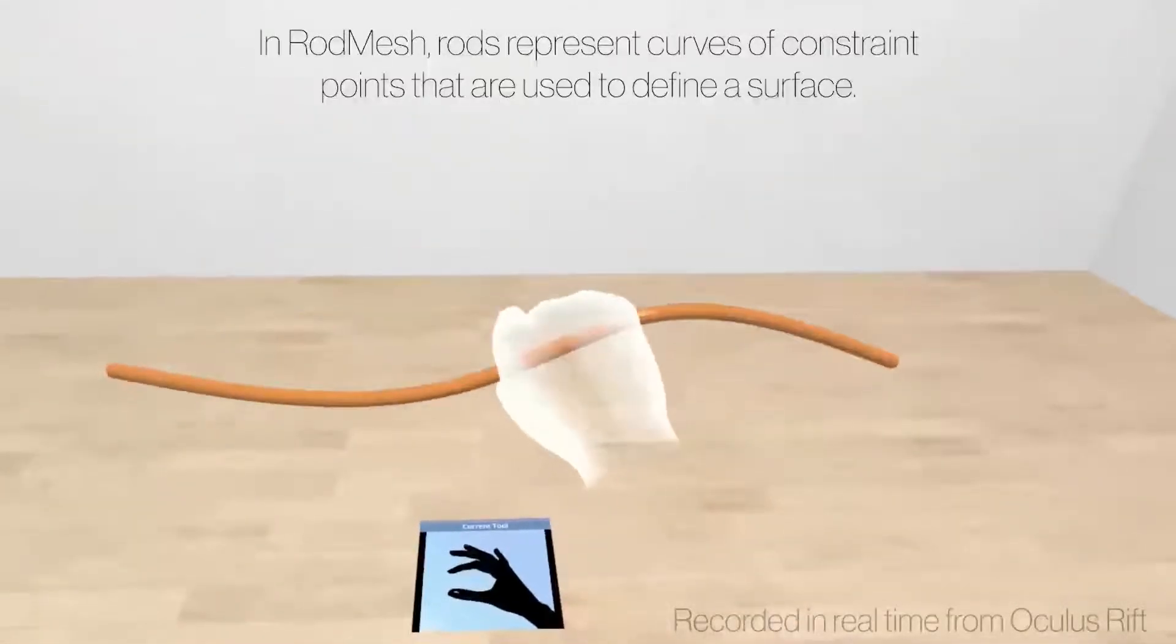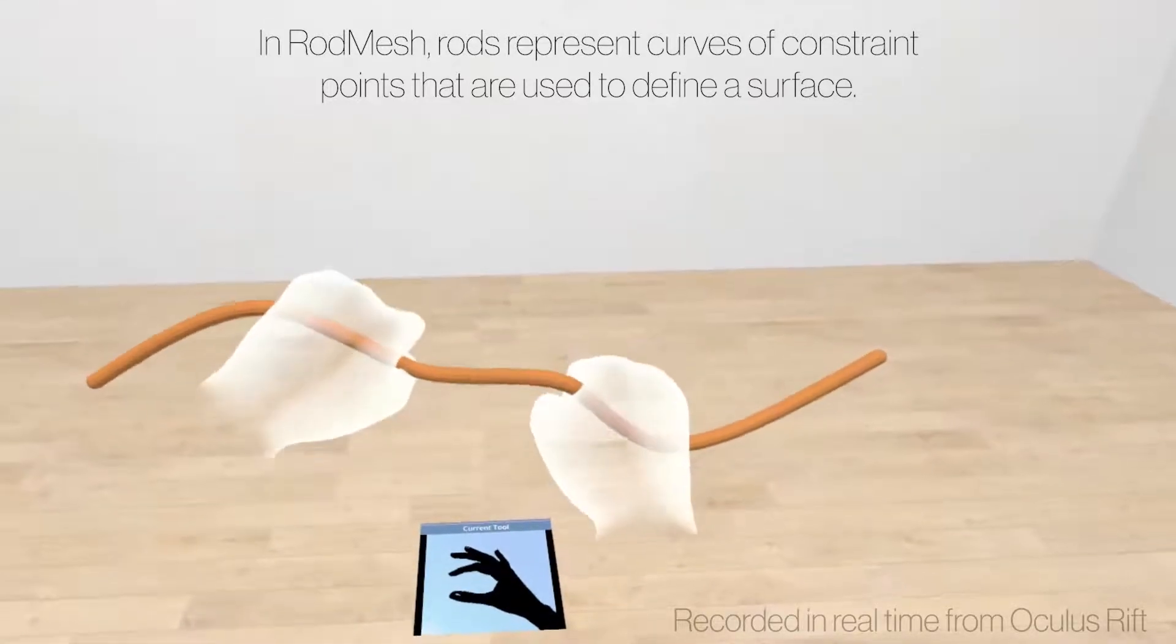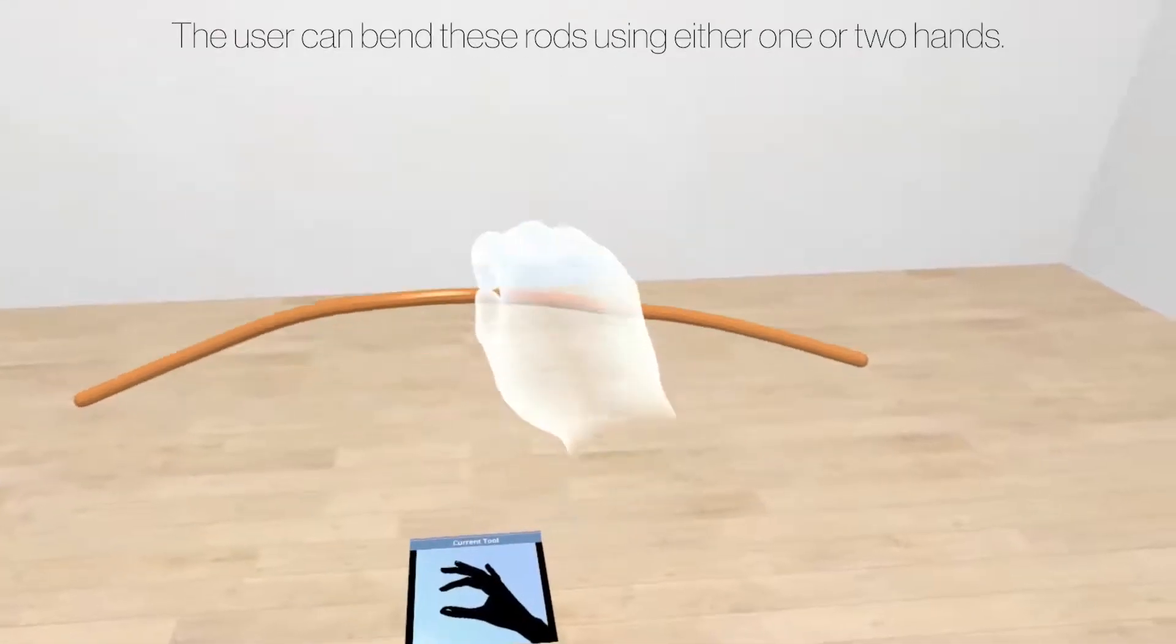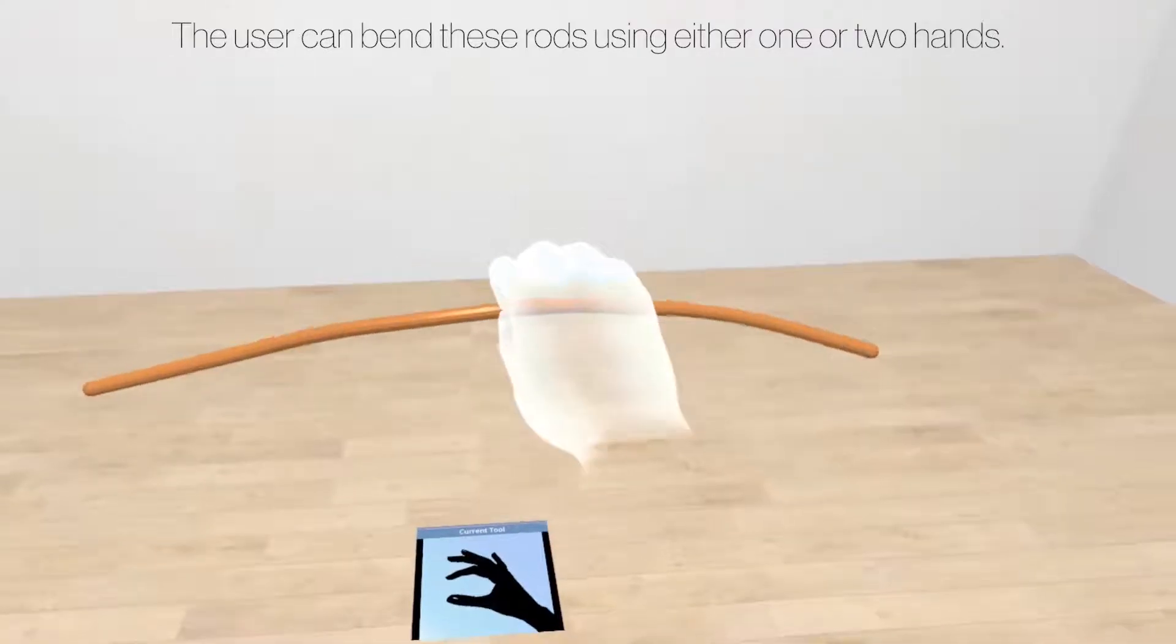In RotMesh, rods represent curves of constraint points that are used to define a surface. The user can bend these rods using either one or two hands.